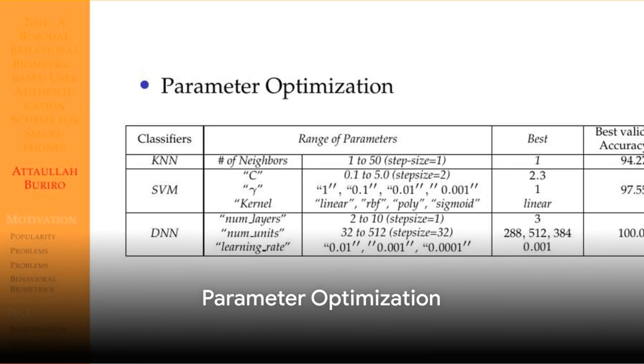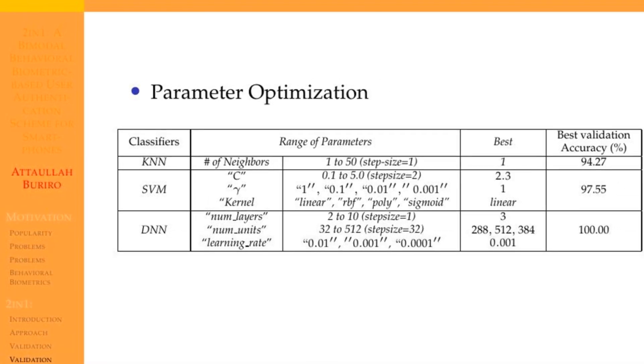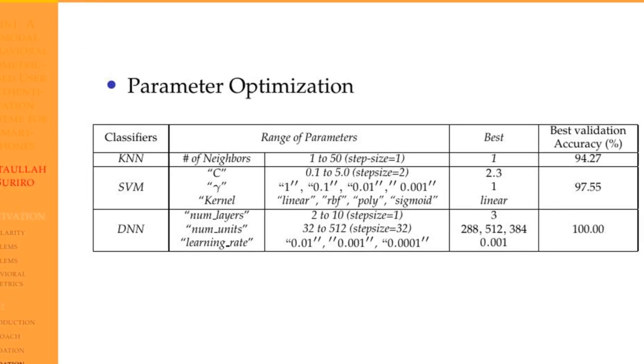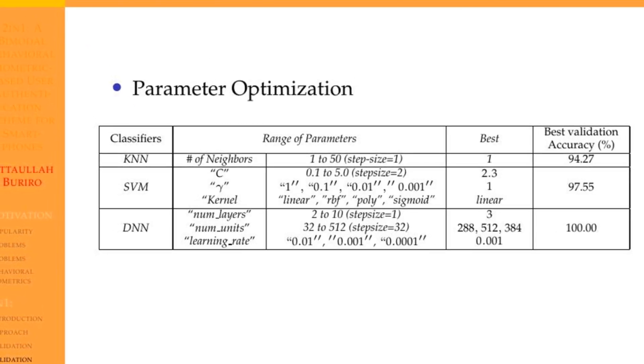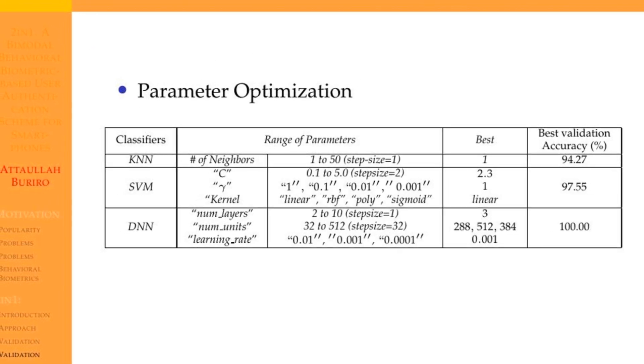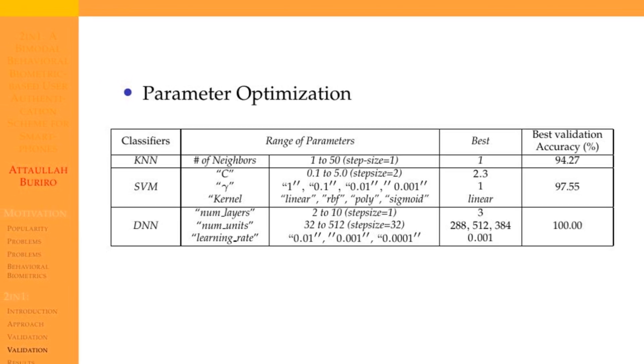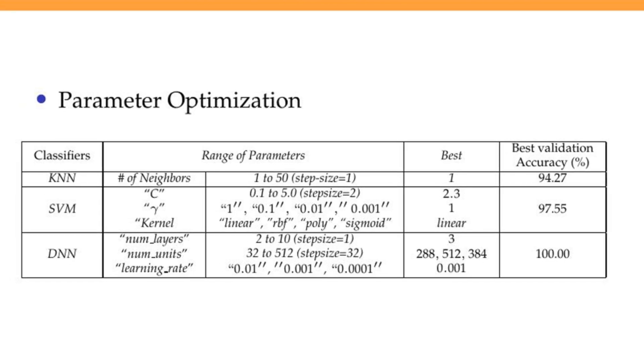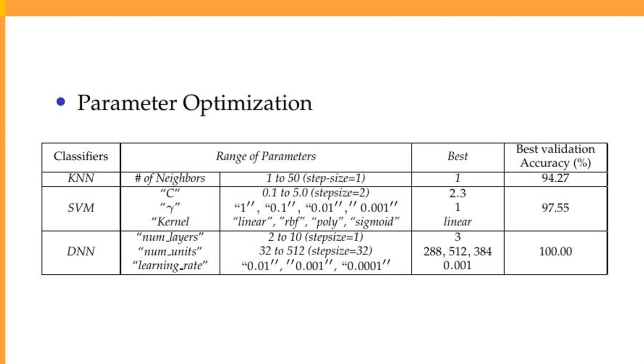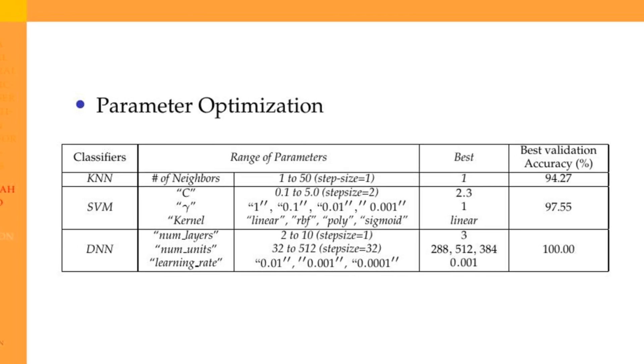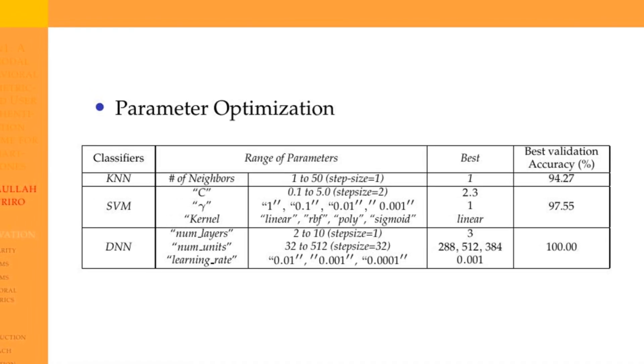Hyperparameter optimization is the process of finding the best set of hyperparameters for a machine learning model. Hyperparameters are the configuration settings of a model that are set before the learning process begins. Unlike model parameters, which are learned during training, hyperparameters cannot be directly learned from the data and must be specified by the practitioner.